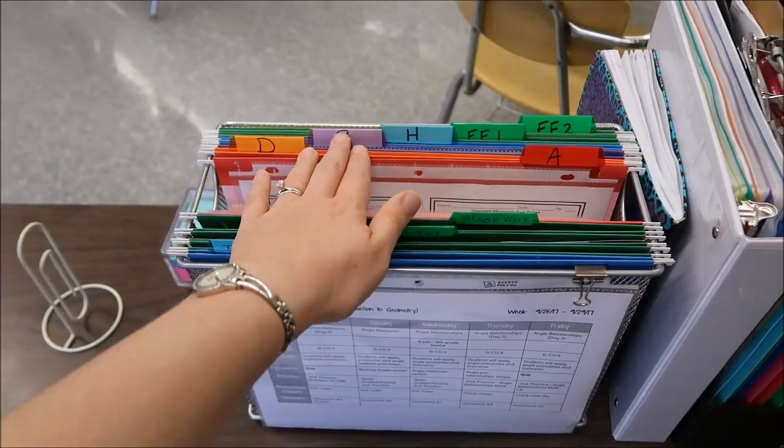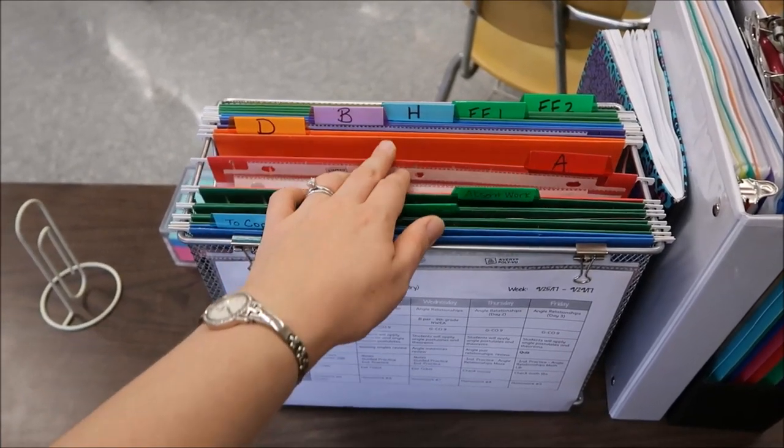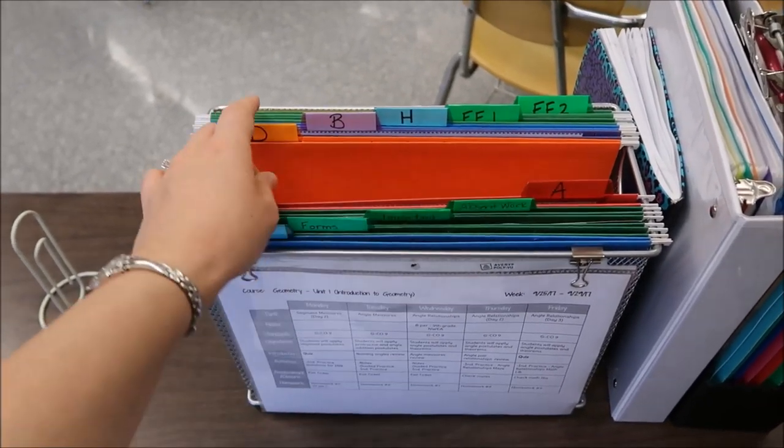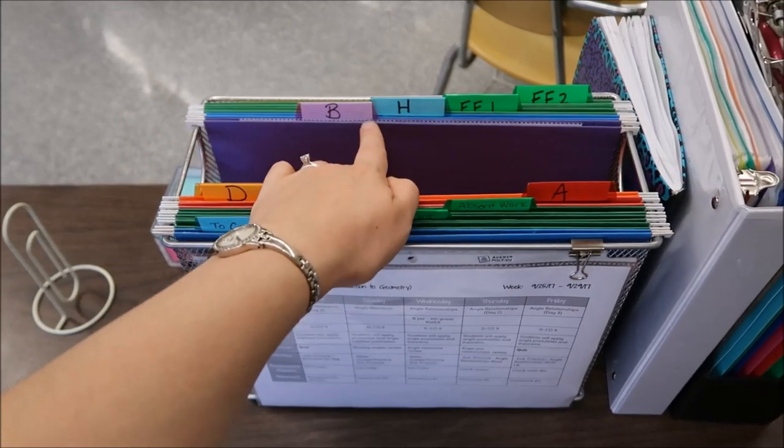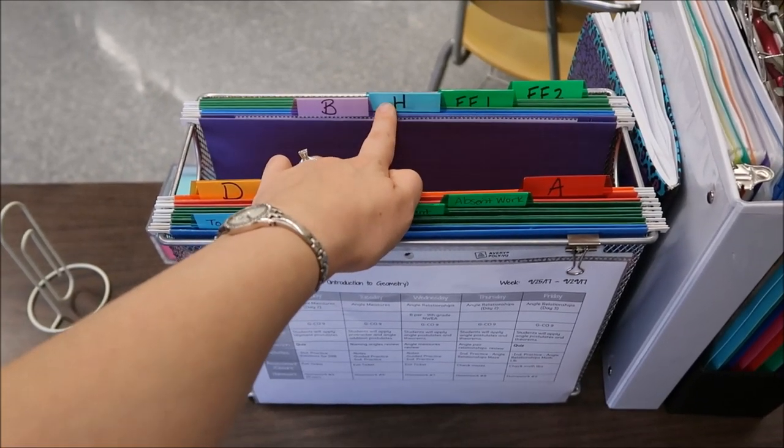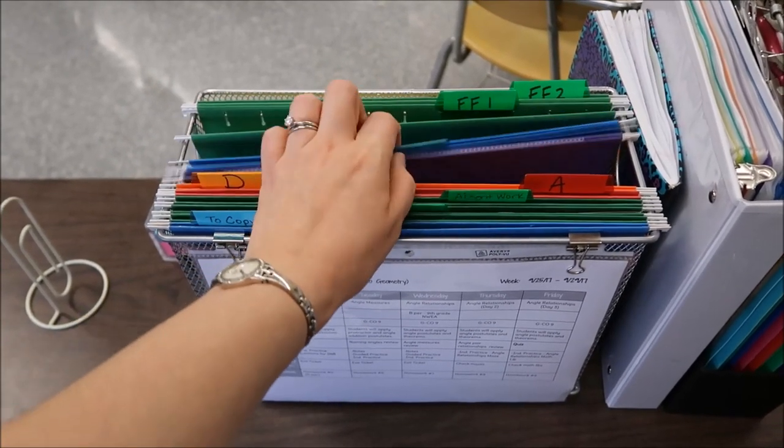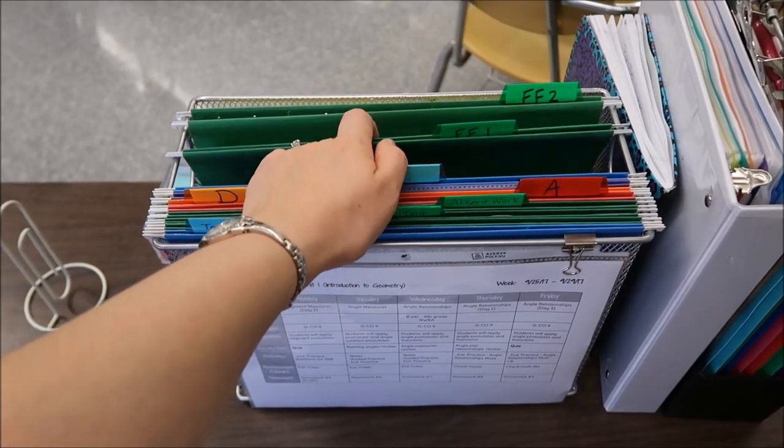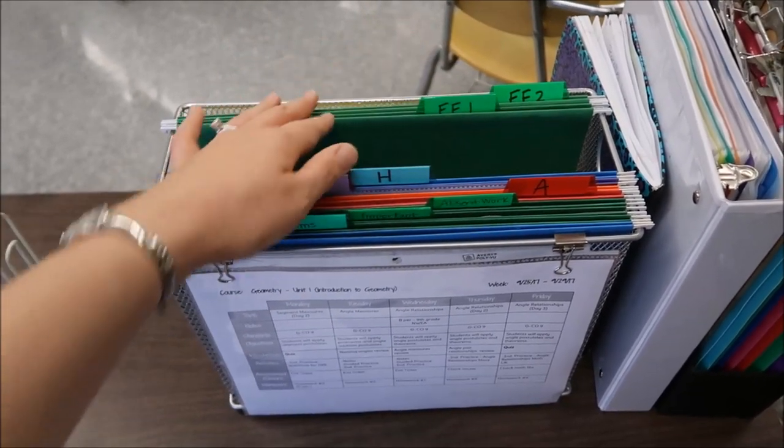I have these folders color coded. I have A and D period. So A is usually I'll have pink or red and then D is orange. For B period and H period they're my geometry classes. So they're blue and purple. For my SAT prep classes they're both green but I have two sections.